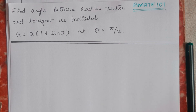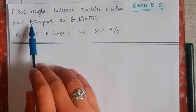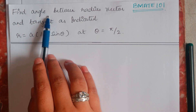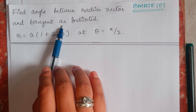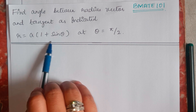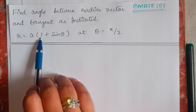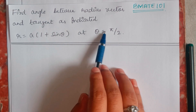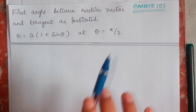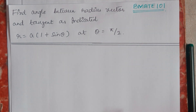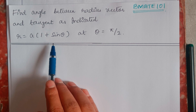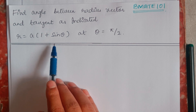Hello everyone, welcome back to my YouTube channel Learn with Sumi. In this video we will learn how to find the angle between the radius vector and the tangent for the curve r = a(1 + sin θ) at θ = π/2. I have solved similar problems in previous videos as well, which you can go through.